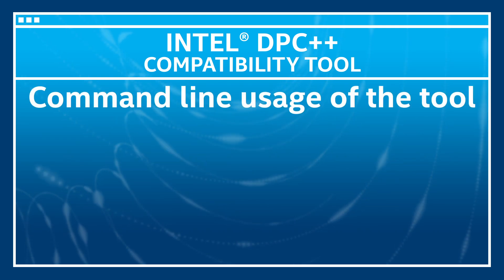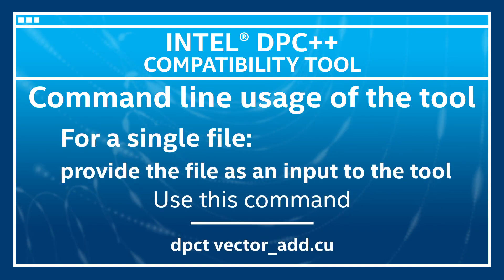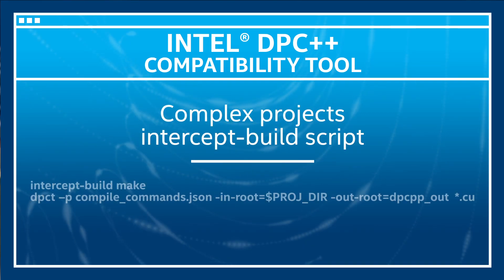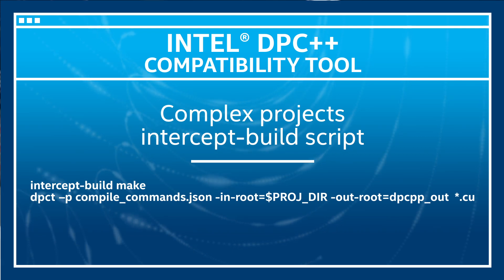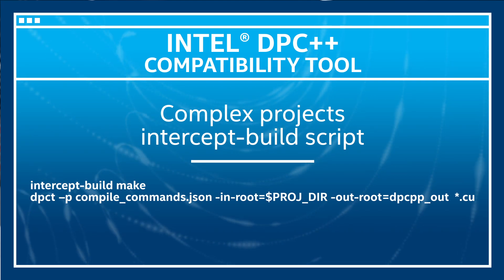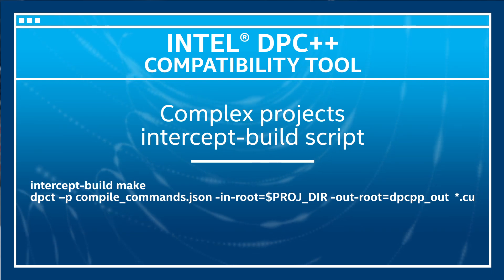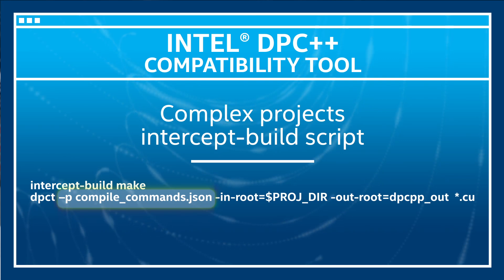Now let's look at the command line usage of the tool. For a single file, it is as simple as providing the file as an input to the tool. In more complex projects, the code workflow depends on factors that are determined at build time — for example, the command line options -D or -I. To know the options, the tool is provided with the intercept-build script that could generate a database of compilation commands of the original project file.